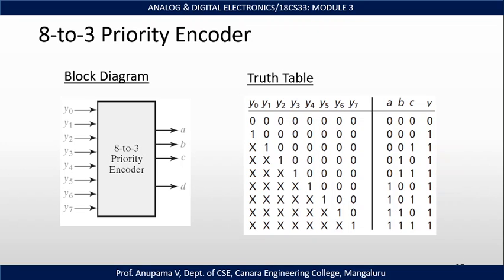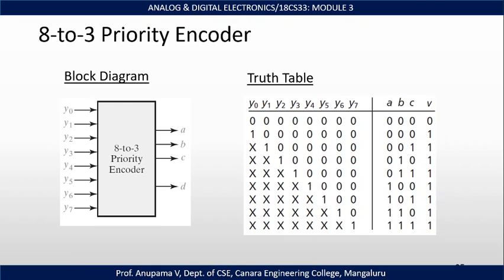Now let us write the truth table for the 8-to-3 priority encoder. Initially, all inputs are set to 0, hence all outputs are set to 0. The output V, the valid output indicator, indicates whether one or more inputs are equal to 1. When no input is set to 1, the valid bit is also 0. When Y0 is set to 1 and Y1 through Y7 are 0, the equivalent output is 0, 0, 0 and the valid output is set to 1 since one input is active.